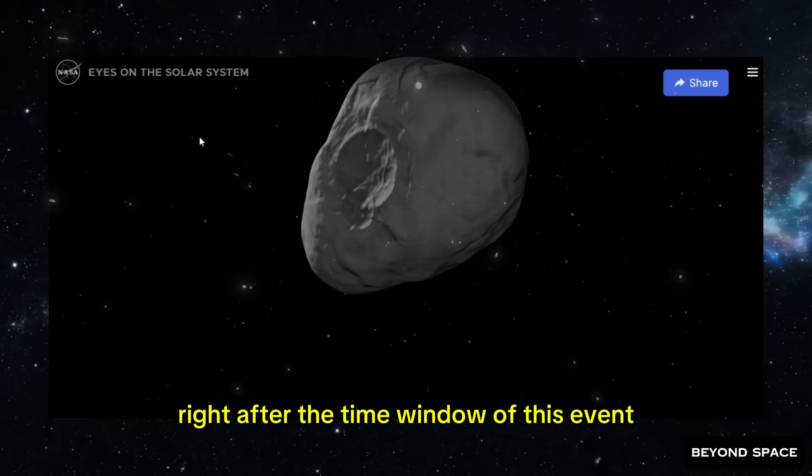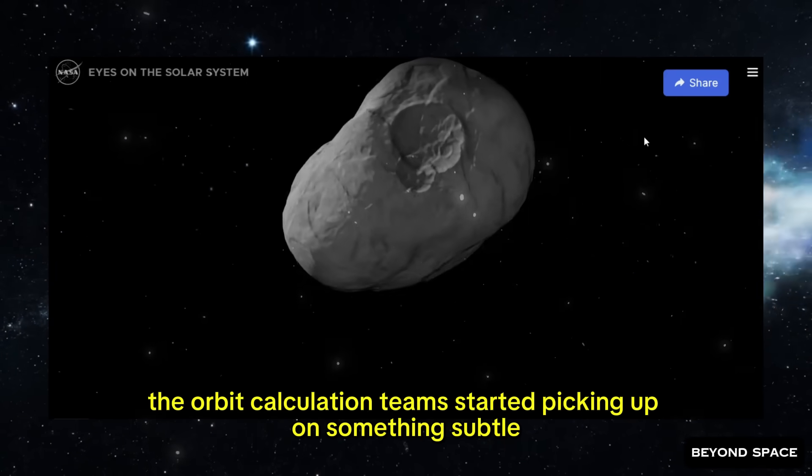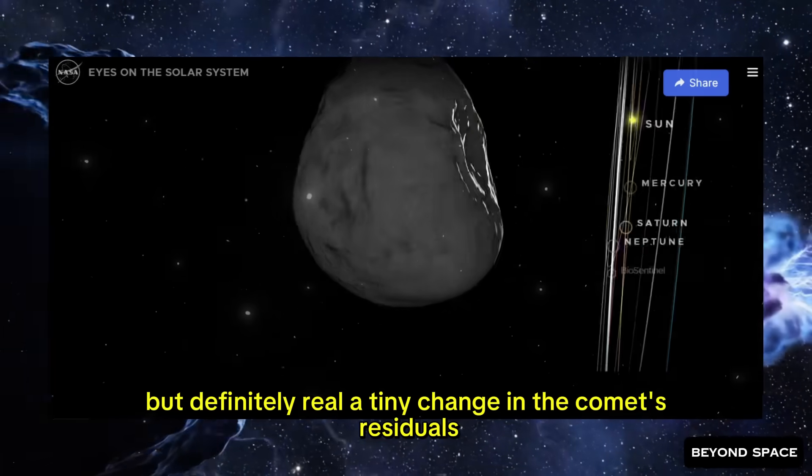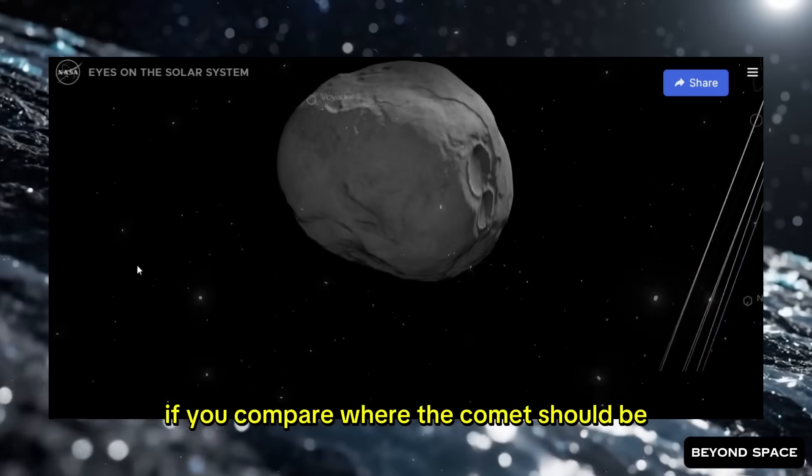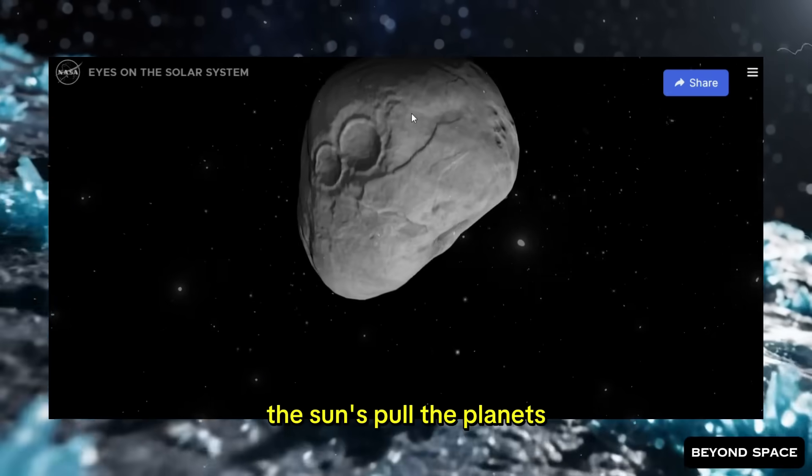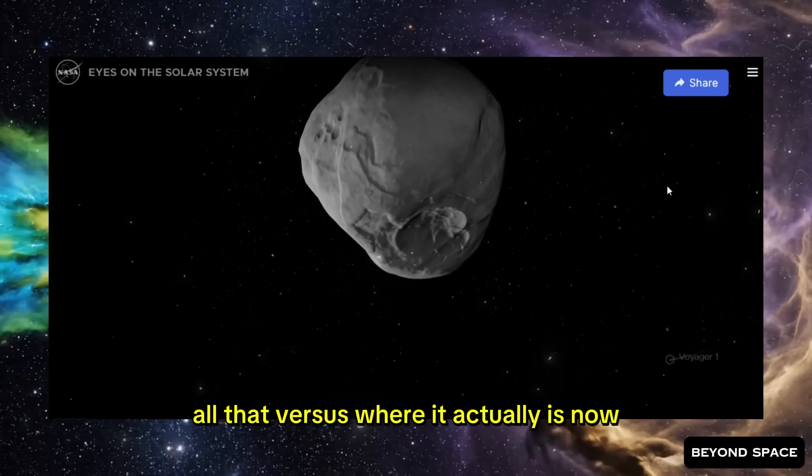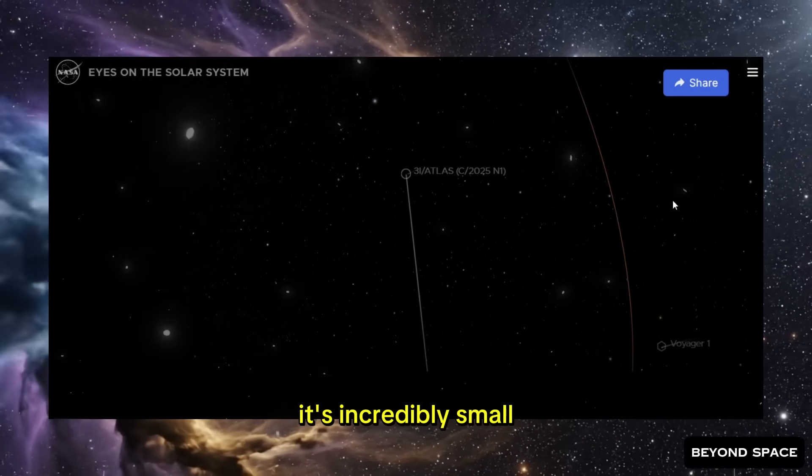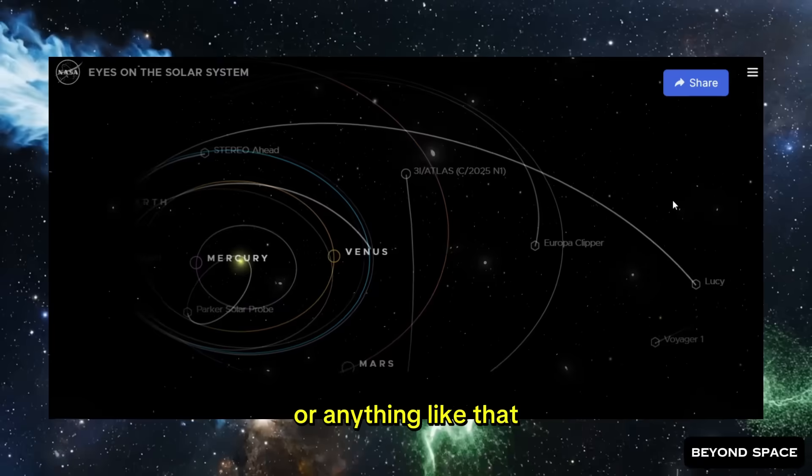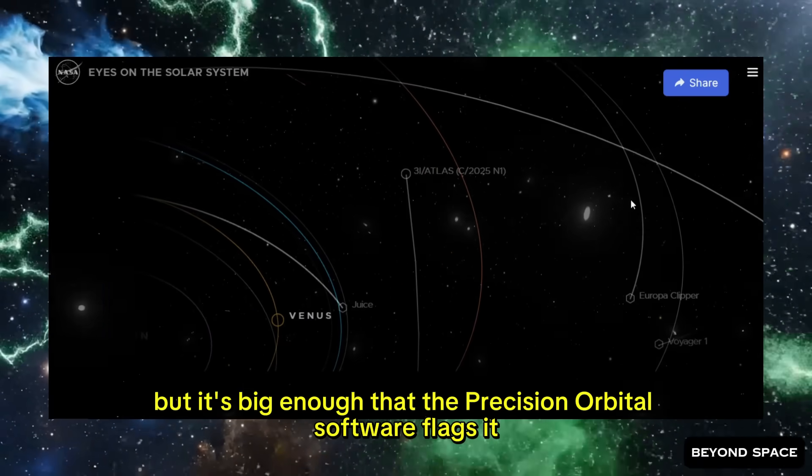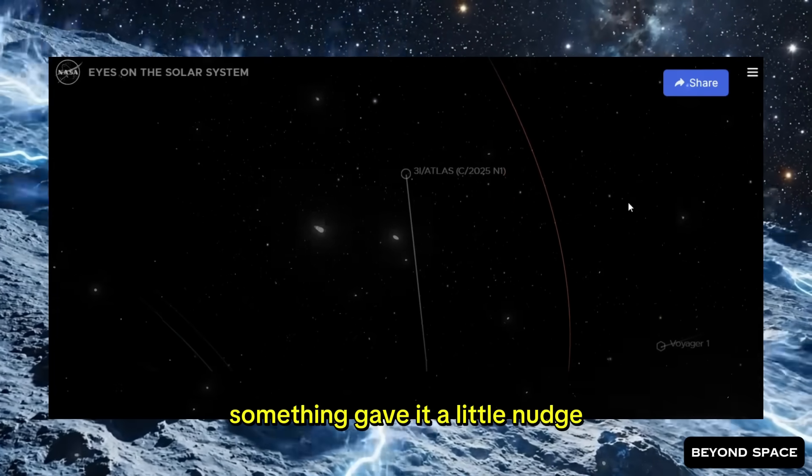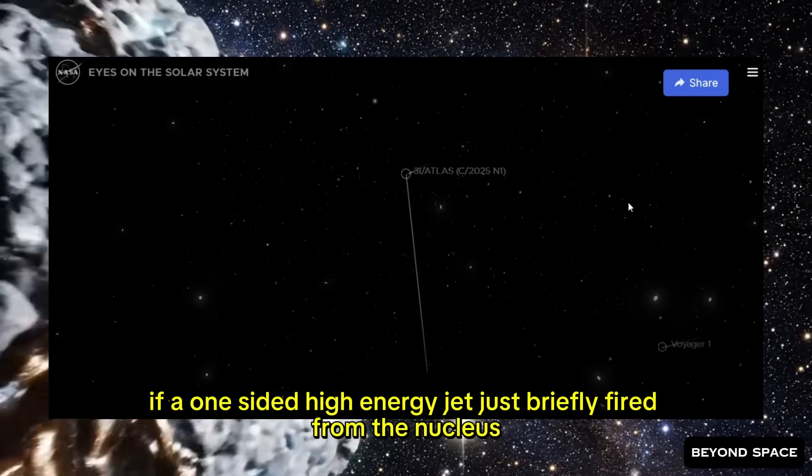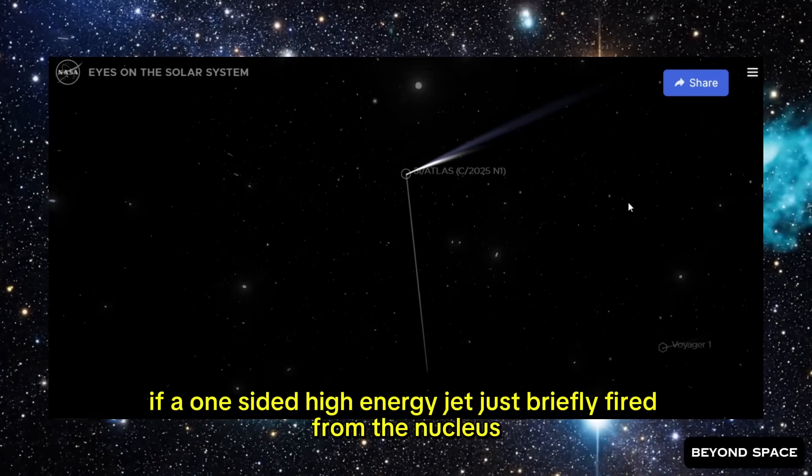Right after the time window of this event, the orbit calculation teams started picking up on something subtle but definitely real. A tiny change in the comet's residuals. Let me explain what that means. If you compare where the comet should be based purely on gravitational forces, the sun's pull, the planets, all that, versus where it actually is now after including this new data point, there's a slight offset. A tiny discrepancy. It's incredibly small. Not something you'd ever feel if you were standing on Earth or anything like that, but it's big enough that the Precision Orbital software flags it and says, hey, something pushed this object. Something gave it a little nudge. And that's exactly, precisely what you would expect if a one-sided, high-energy jet just briefly fired from the nucleus. For a few minutes there, 3i Atlas essentially lit a thruster on one side and gave itself a tiny push.